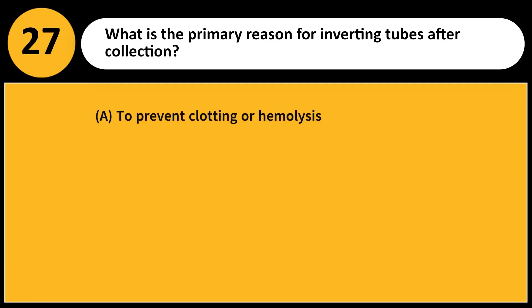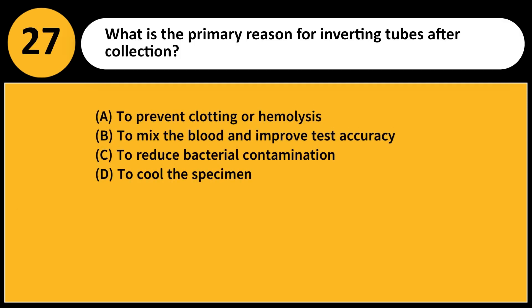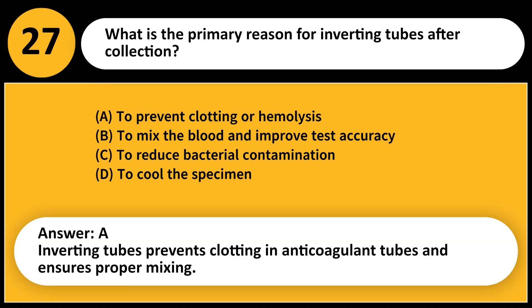What is the primary reason for inverting tubes after collection? A. To prevent clotting or hemolysis. B. To mix the blood and improve test accuracy. C. To reduce bacterial contamination. D. To cool the specimen. Answer: A. Inverting tubes prevents clotting in anticoagulant tubes and ensures proper mixing.